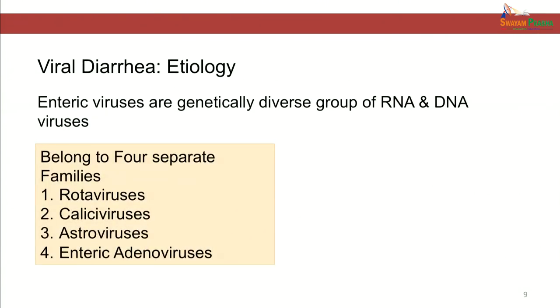Coming to the etiology of viral diarrhea, the viruses causing diarrhea belong to a genetically diverse group of RNA and DNA viruses. There are 4 separate groups of viruses which cause viral diarrhea: rotaviruses, caliciviruses, astroviruses and enteric adenoviruses. Certain other viruses like coronaviruses, human bocaviruses and toroviruses are also believed to cause viral diarrhea, however their exact role has not yet been proved.